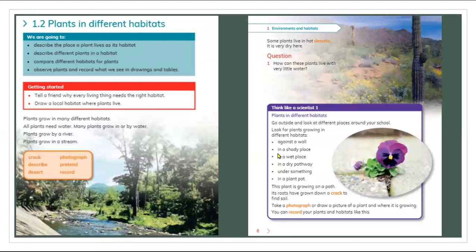Here in the book you can see different plants — trees, some mini plants, and flowers. These plants' habitat is beside the river. So the river is the habitat of these plants, and the plants have enough water to grow.